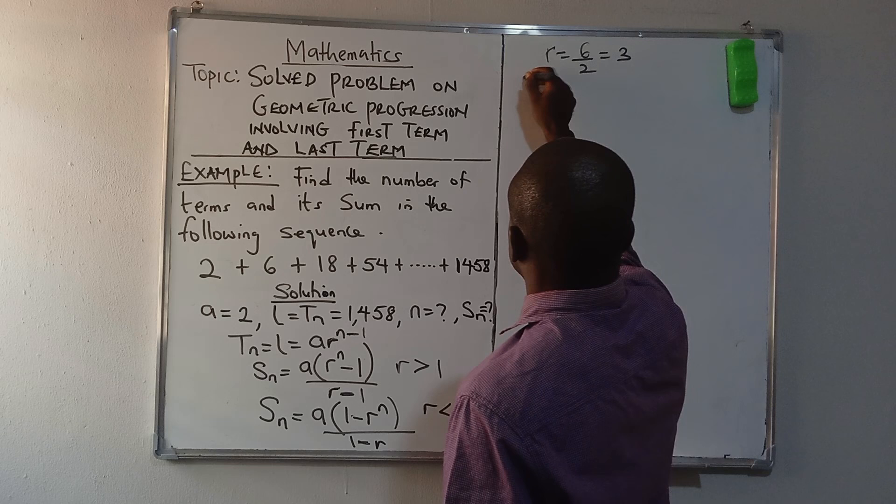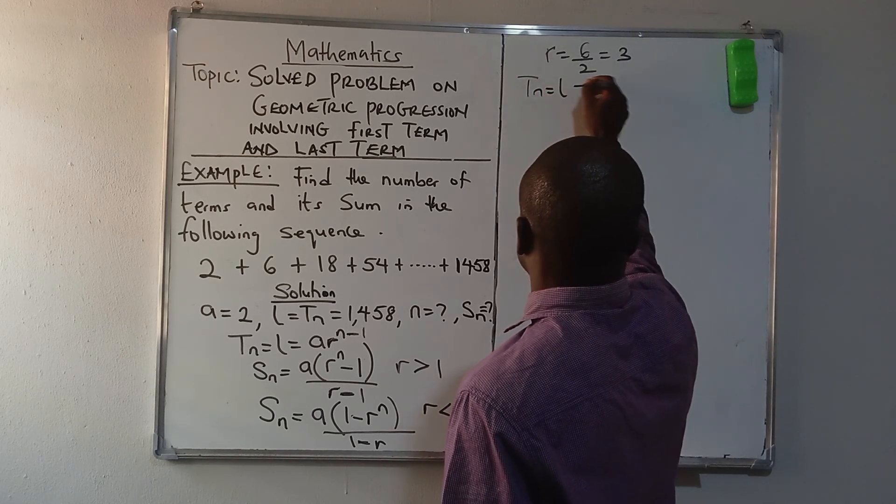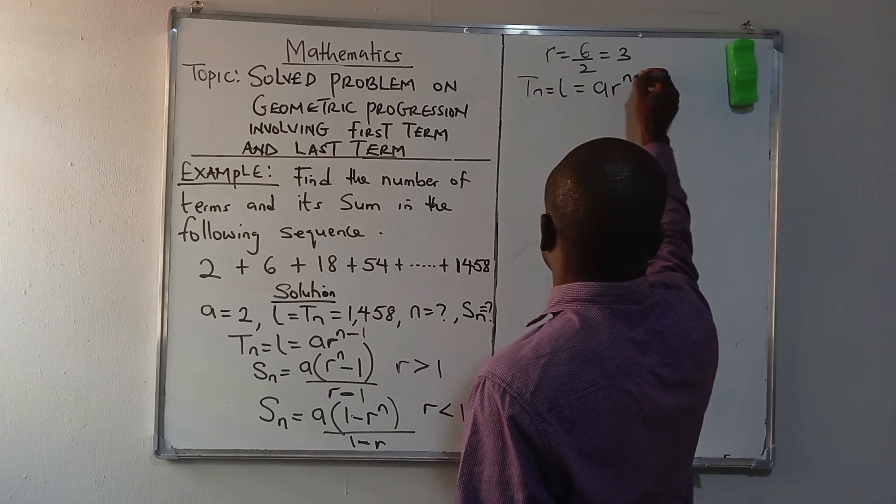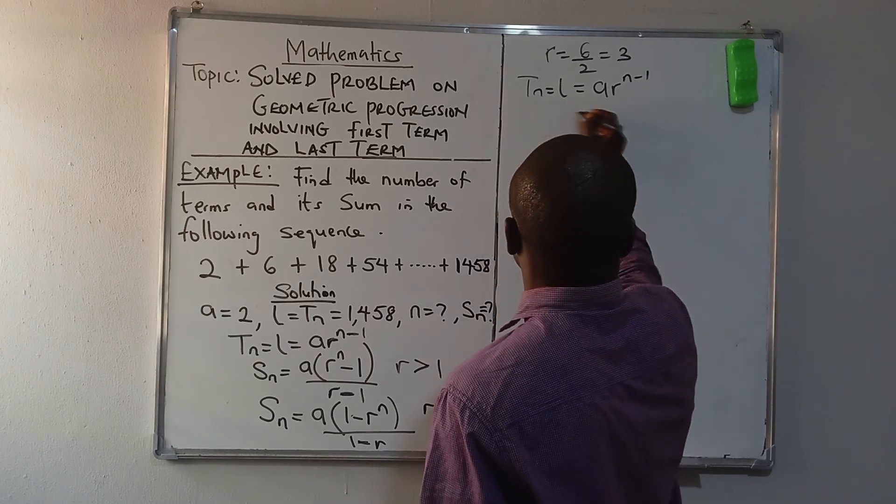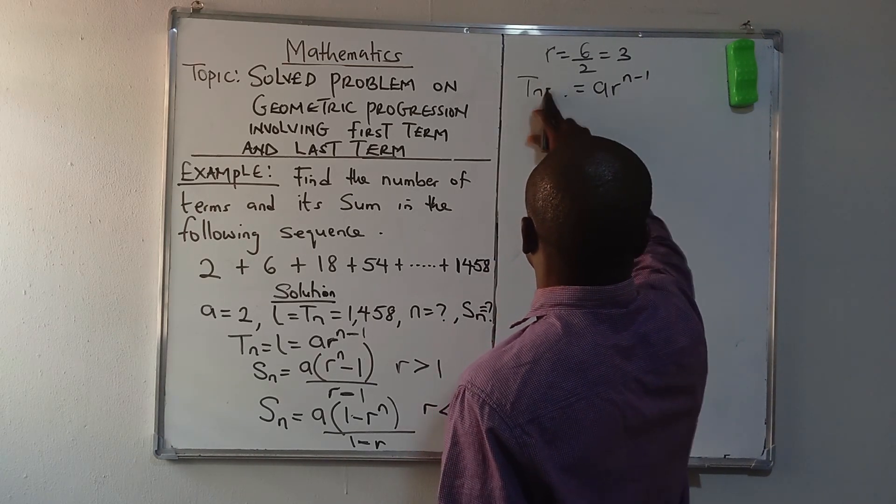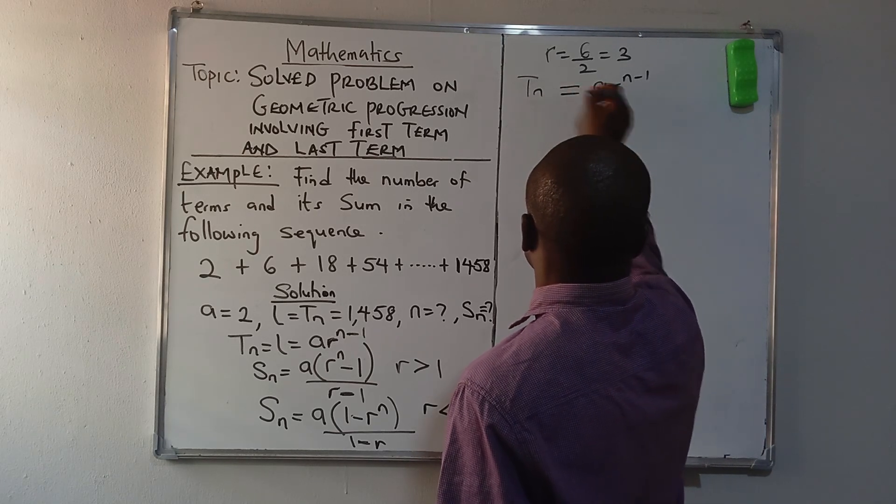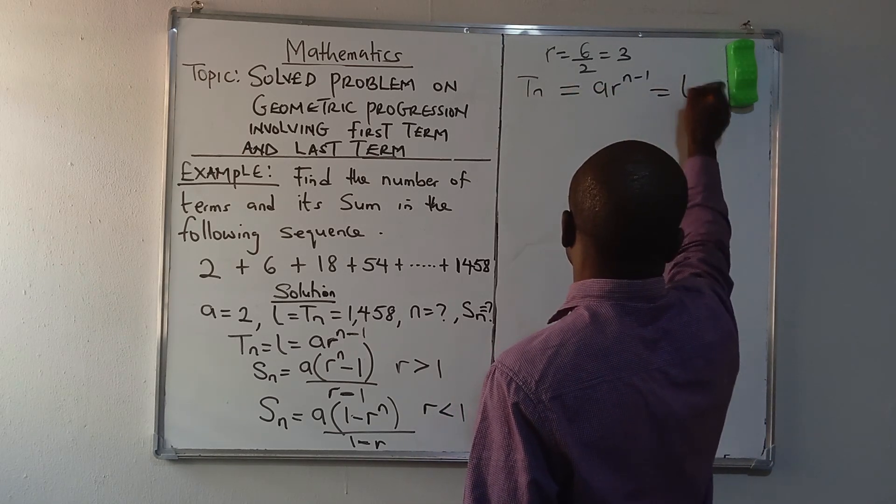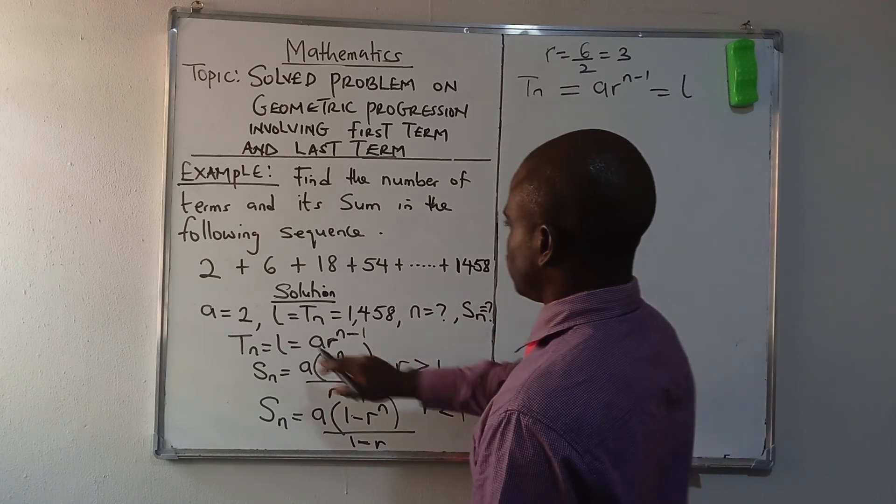From here, let's write our last term. TN equals the last term, which is A·R^(N-1). That is the formula now. Let's put it here, so that's TN equals this and is equals to the last term.